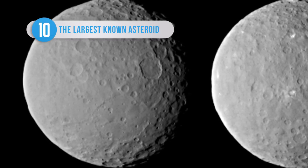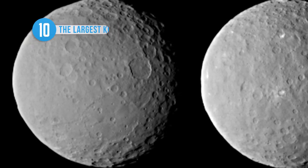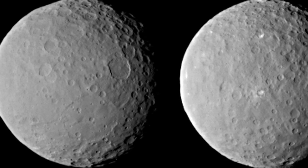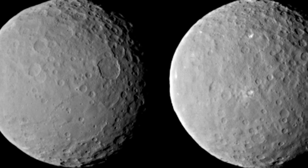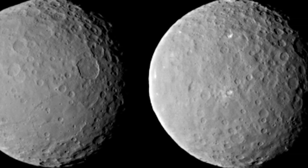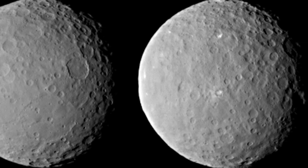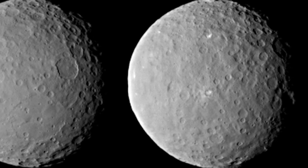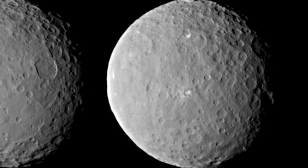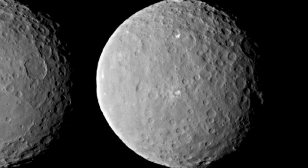Discovered in 1801 by Giuseppe Piazza, Ceres is a massive asteroid which inhabits the asteroid belt between the orbits of Mars and Jupiter. It contains a third of the mass of the entire belt and is around the size of the great state of California. Its own gravity is so strong that it forces it into a spherical shape and has earned itself the title of dwarf planet, the only object in the asteroid belt which qualifies for the designation.